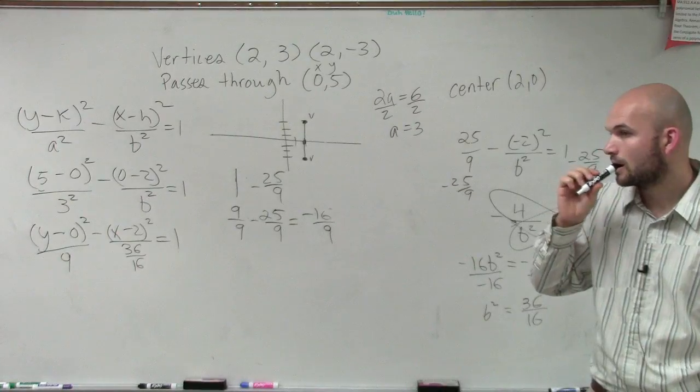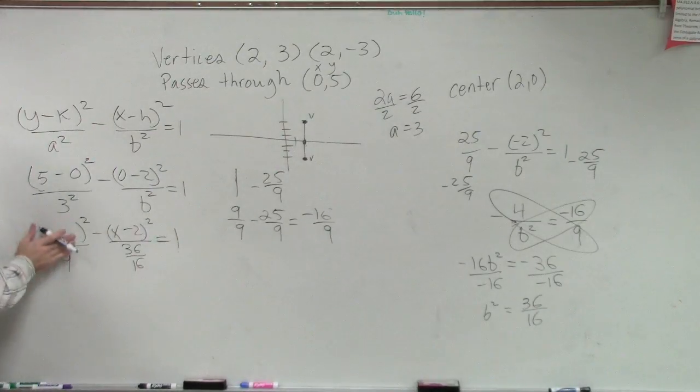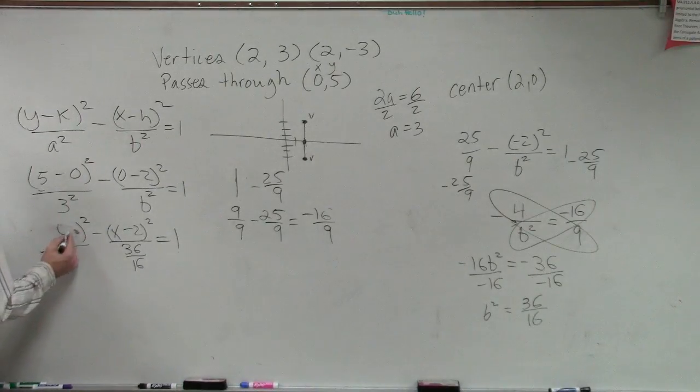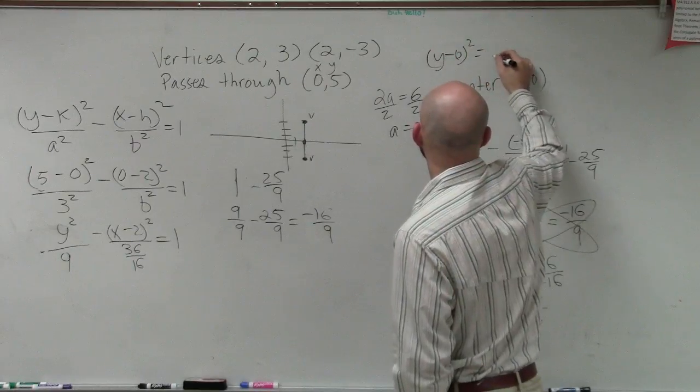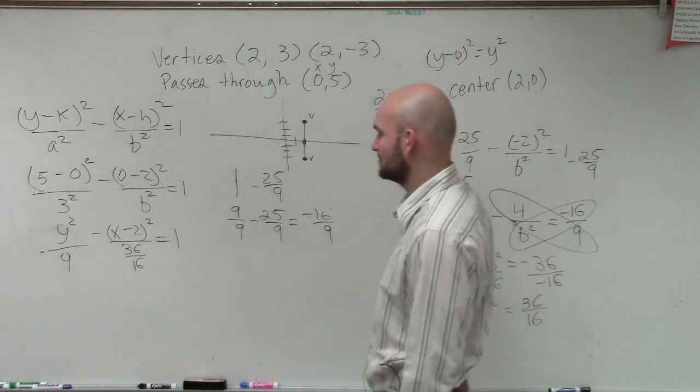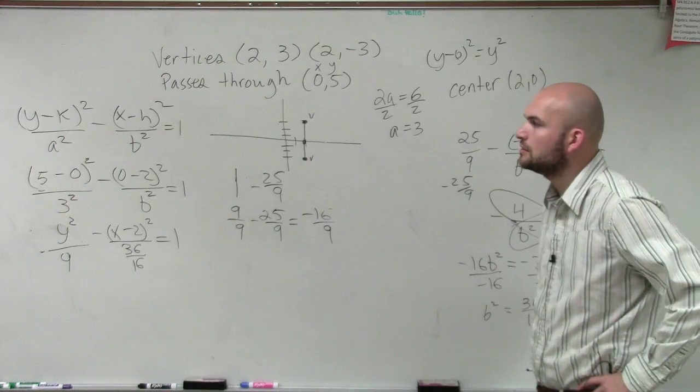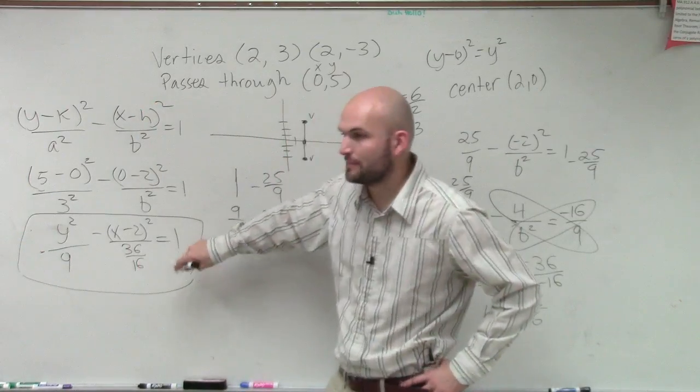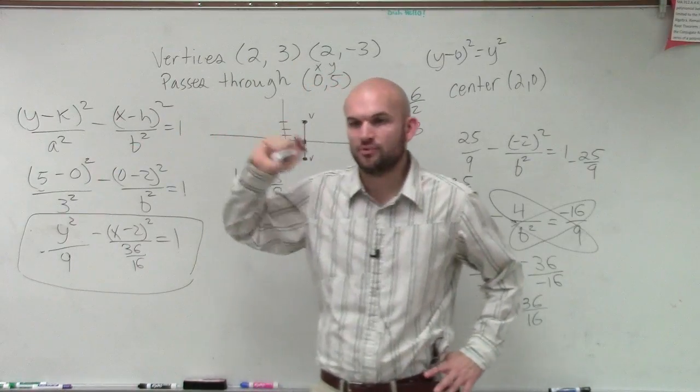Student: So you don't plug in like what you did up there when you plugged in 5 and 0? You just leave it out. What am I doing? No, you don't need to write y minus 0. It's just y². Y minus 0 squared is equal to y². It's the same thing. What was your question? But what I'm asking is that up there you plugged in 5 for y. Why don't you plug it in that? Because now this is the general form for the whole hyperbola. This doesn't represent one point. This represents all the points. When we plugged them in we were just trying to find it for one point.